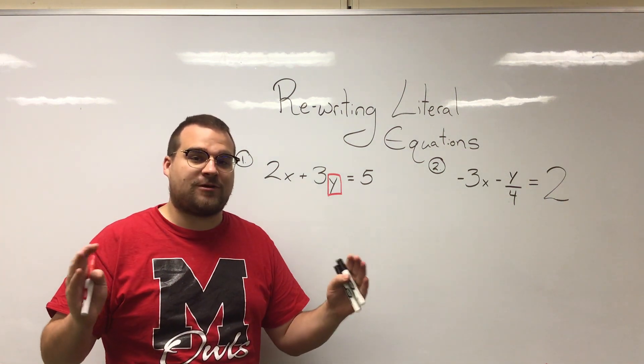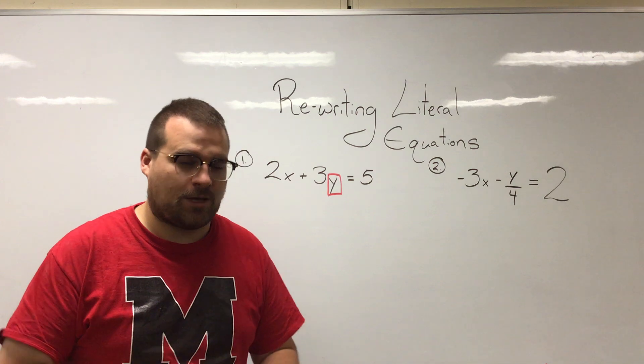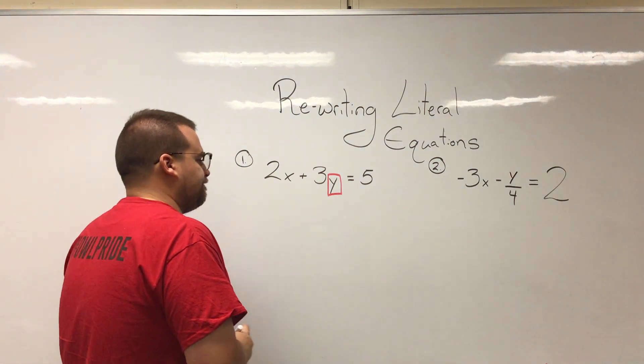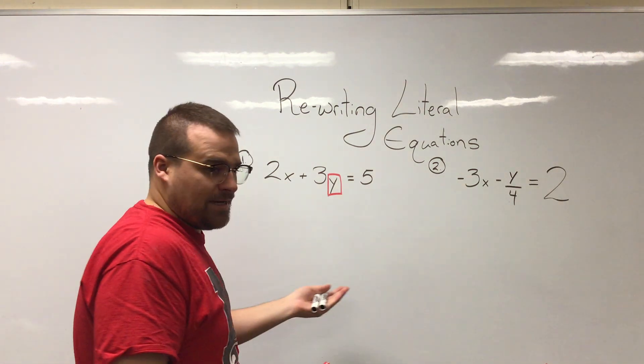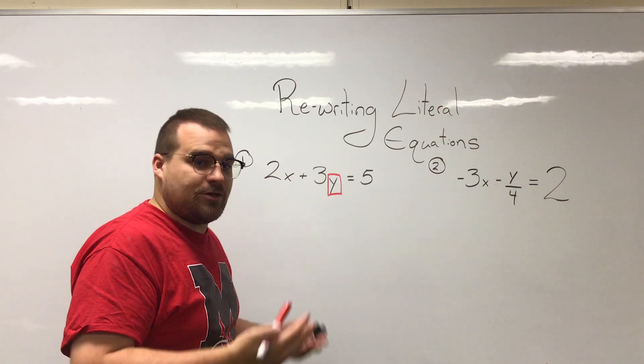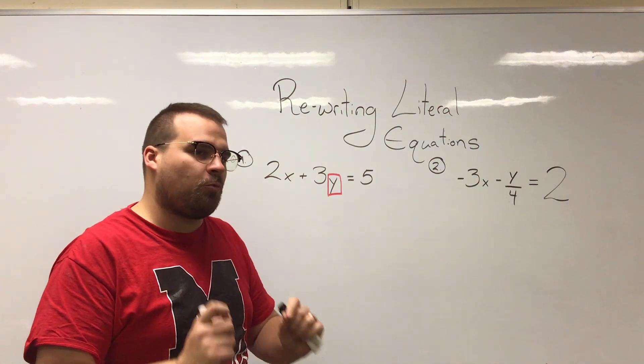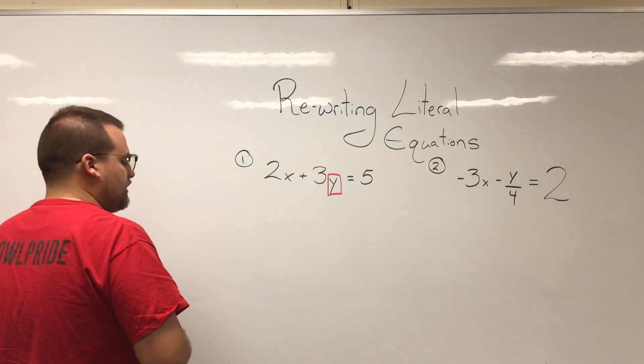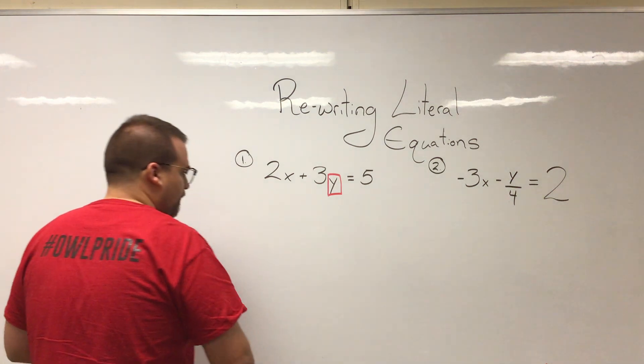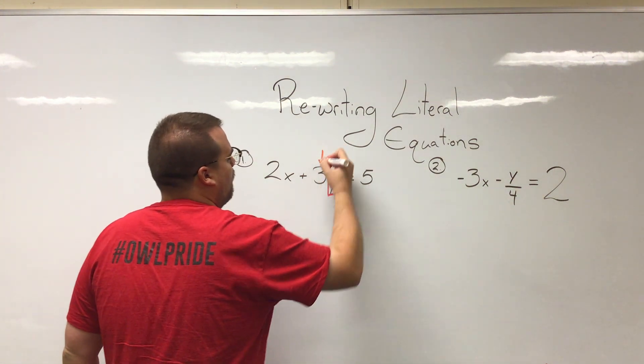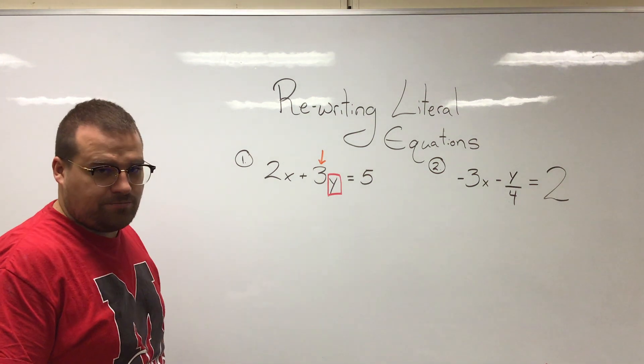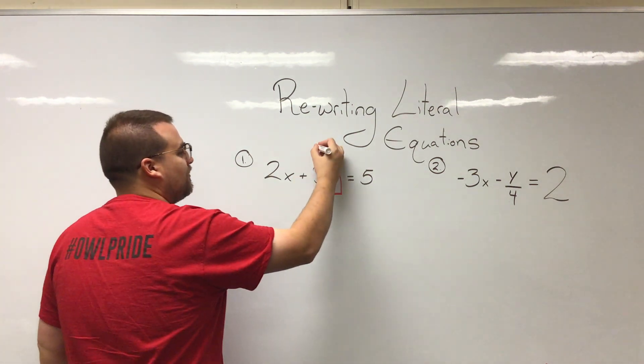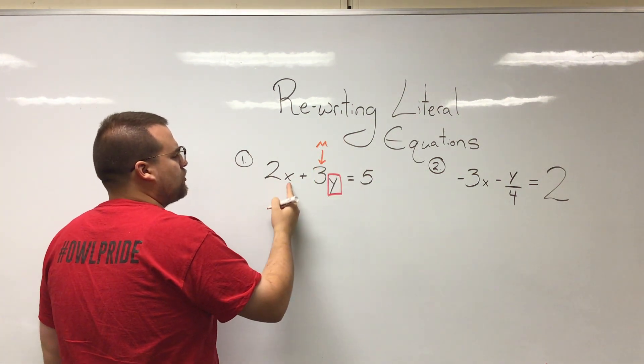Okay, so we want to ask ourselves what is the stuff around it doing to the y. So let's take a look here. We have a three right next to the y. Well what's the three doing? It's multiplying.